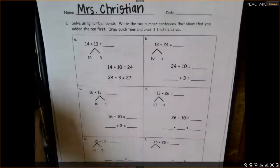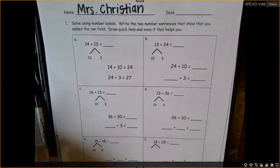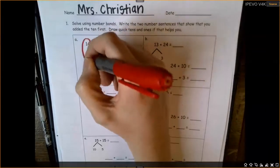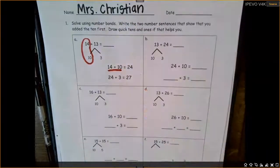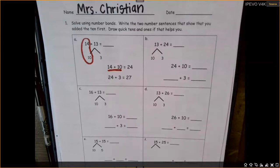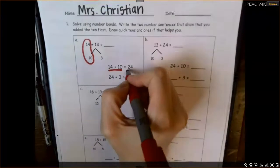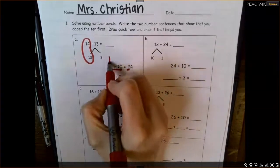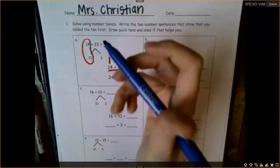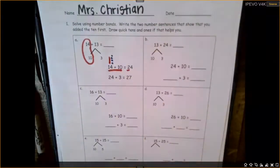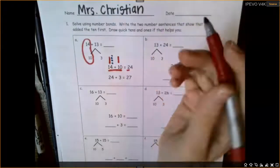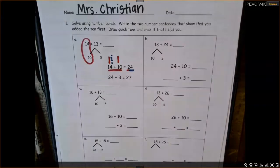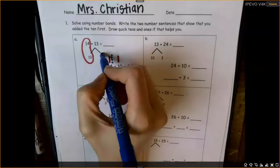Plus 13. What we're going to do first is add the tens. So we're going to add this 14 and this 10. When we add 14 plus 10 more, we have two tens — because if we have 14 and then another 10, that makes 24.